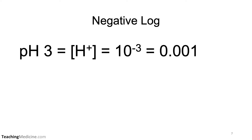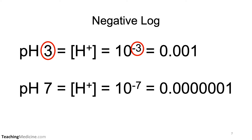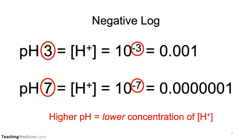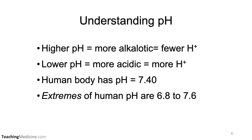This means that a pH of 3 indicates that the hydrogen ion concentration equals 10 to the minus 3, whereas a pH of 7 corresponds to a concentration of 10 to the minus 7, which is a much smaller concentration — seven decimal places. So the higher the pH is, the lower the concentration of hydrogen ions. A higher pH means more alkalotic and fewer hydrogen ions; a lower pH means more acidic and more hydrogen ions. The human body has a pH of 7.40, and the extremes of the human pH range from about 6.8 to 7.6.